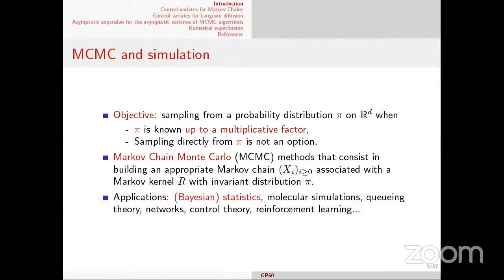When you have a distribution known up to normalizing factors, there are not many options. You can do something linked with importance sampling, but in high dimension it's sometimes not very appropriate. There are improvements like sequential Monte Carlo techniques developed by Del Moral and Doucet. But MCMC — Markov Chain Monte Carlo, introduced a long time ago — is still a technique of reference. What I will say today is about control variates for Markov Chain MCMC simulation.